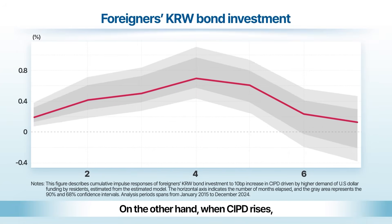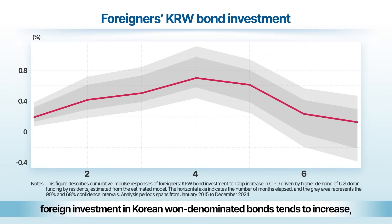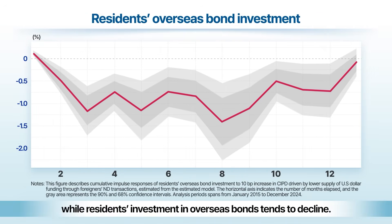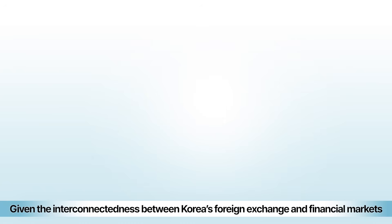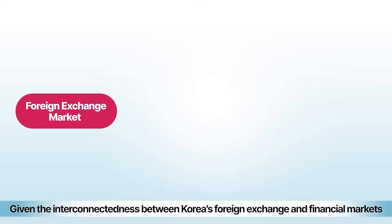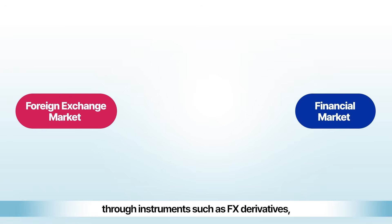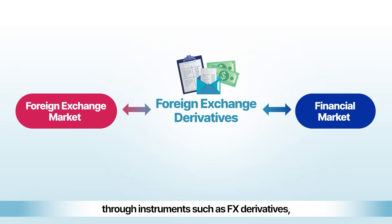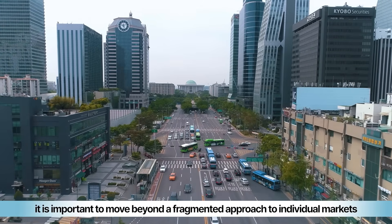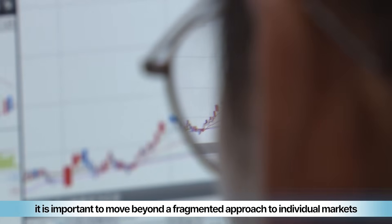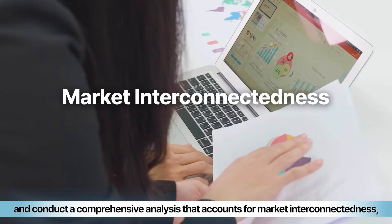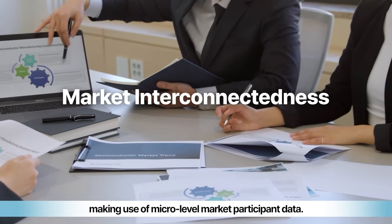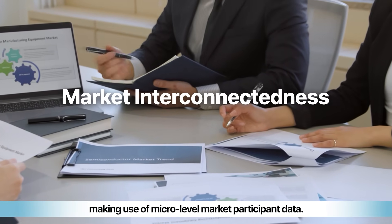On the other hand, when CIPD rises, foreign investment in Korean won-denominated bonds tends to increase, while residents' investment in overseas bonds tends to decline. Given the interconnectedness between Korea's foreign exchange and financial markets through instruments such as FX derivatives, it is important to move beyond a fragmented approach to individual markets and conduct a comprehensive analysis that accounts for market interconnectedness, making use of micro-level market participant data.